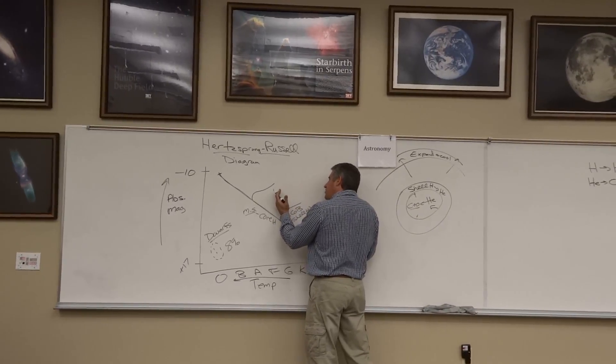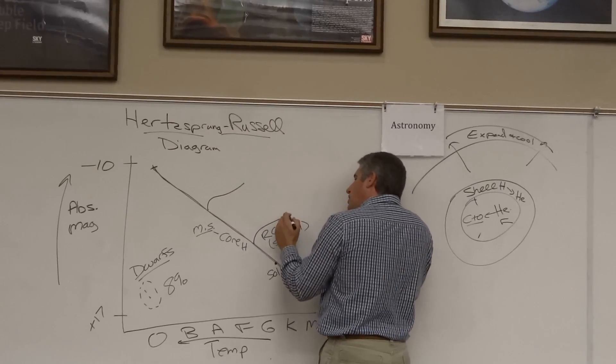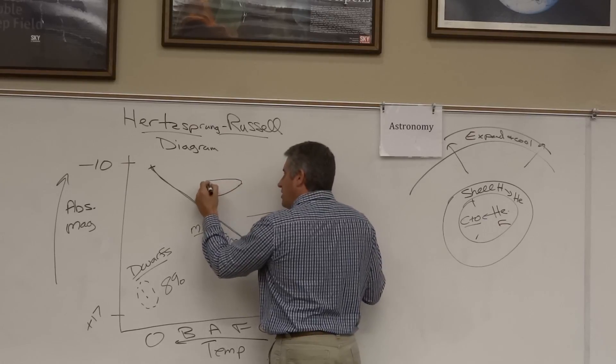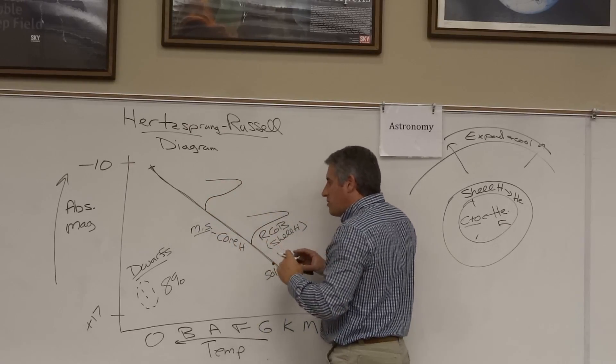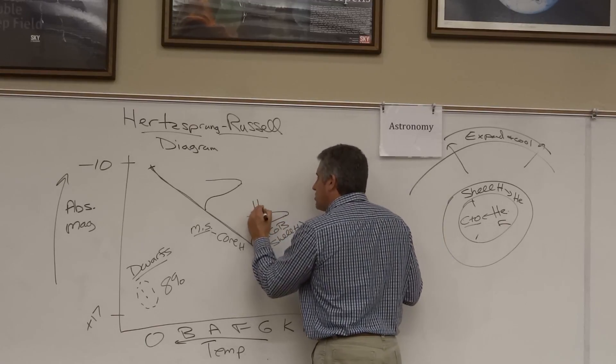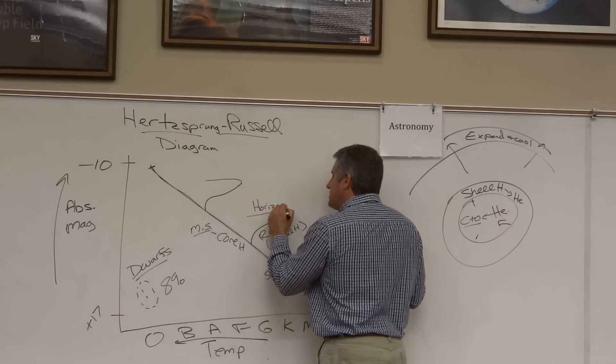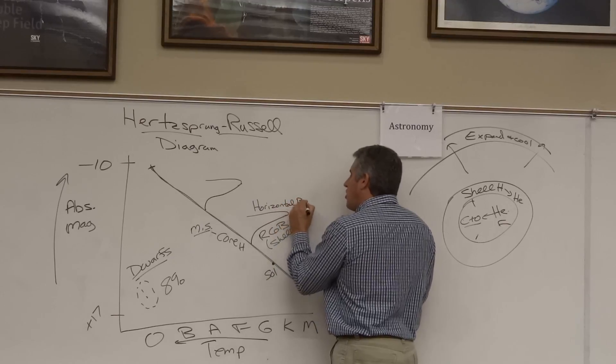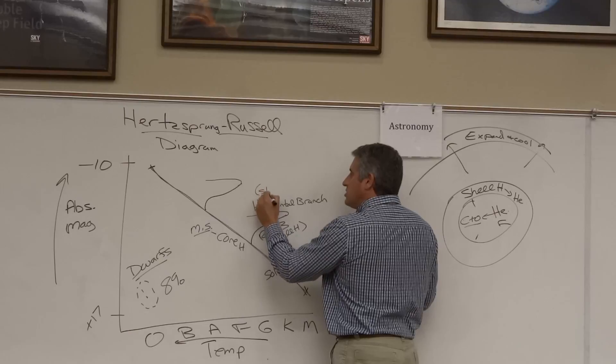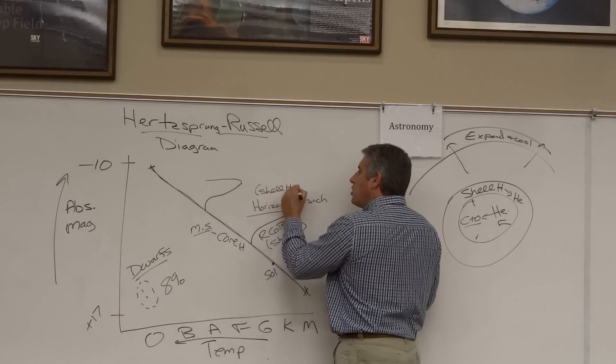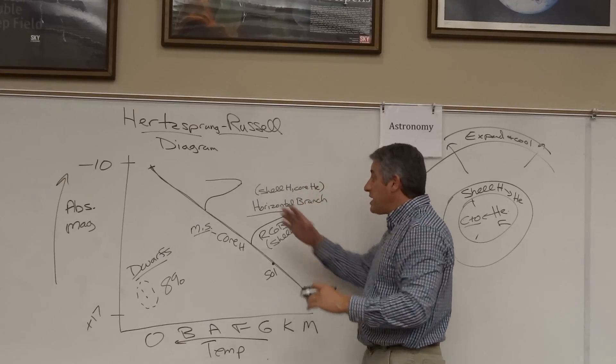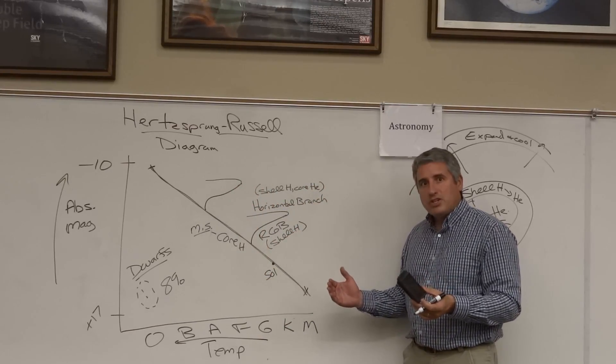So when it got bigger and brighter and cooler, now the star returns to its original temperature. But it no longer is at the same brightness. We call this the horizontal branch for obvious reasons. It's a horizontal line as the star begins to burn not just shell hydrogen but core helium. And all stars, big and small, move on to this horizontal branch.